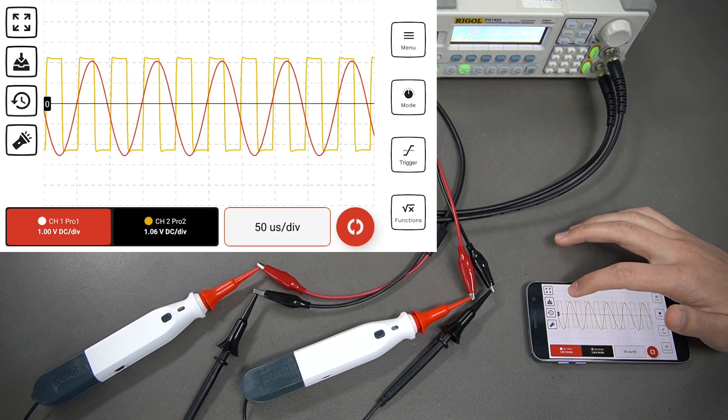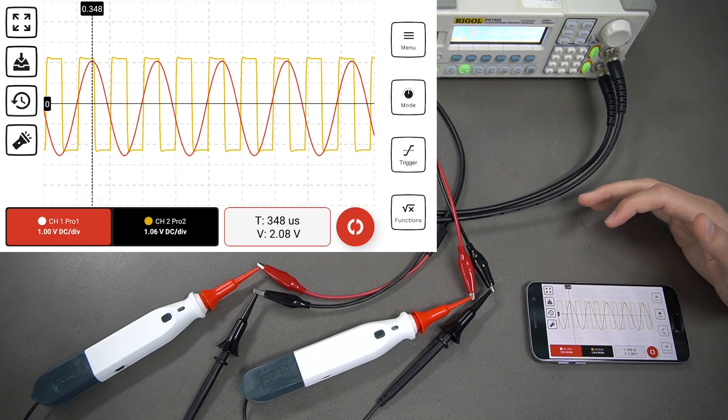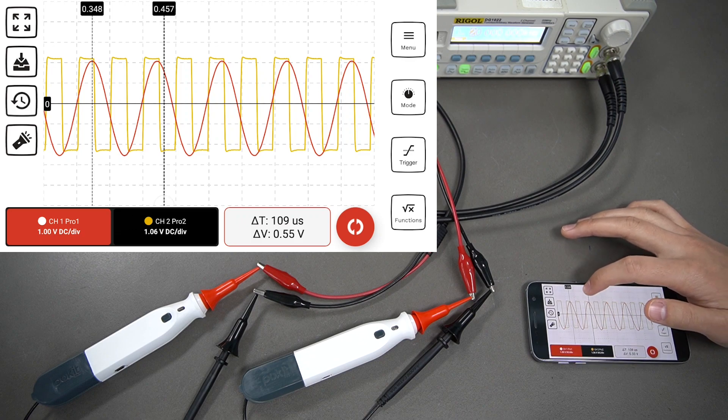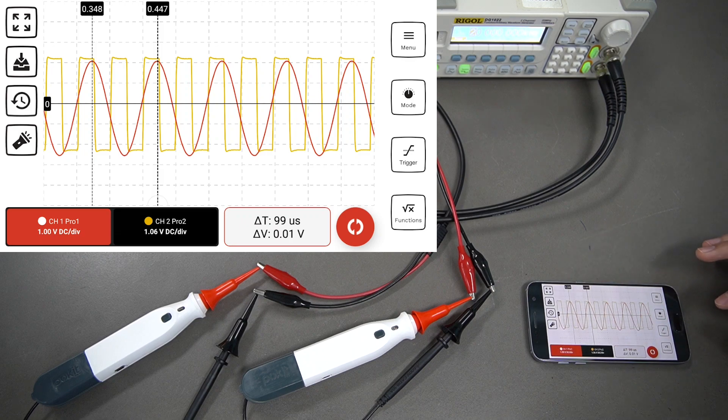You can also create cursors by holding down anywhere on the screen. You're going to get this cursor here. You can tap that and drag it to place it wherever you want. You can create a second one by doing the same, just holding somewhere else on the screen. You can tap and move that, and you're going to get the difference between the two cursors down the bottom here.